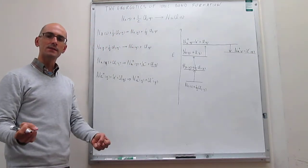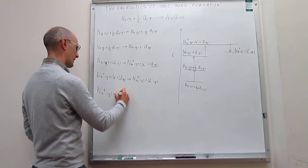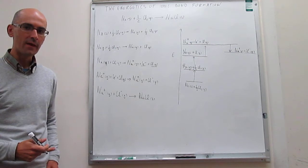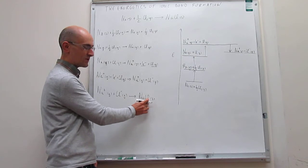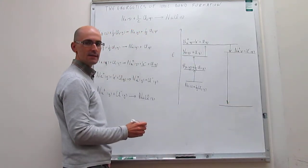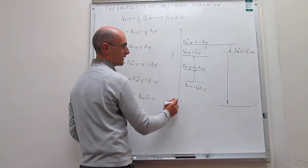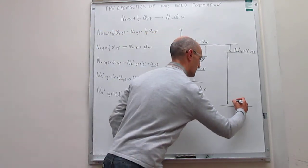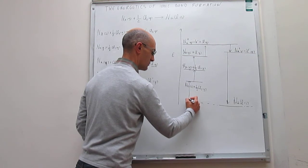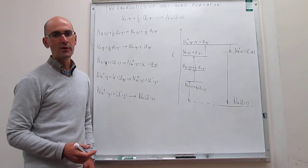The last step is to take these ions in the gas phase and have them interact to form the solid. Na⁺ gas plus Cl⁻ gas generates sodium chloride solid. This is the key interaction that makes the ionic bond possible — there is a very strong interaction between ions in the solid, and that is extremely favorable, such that the overall formation process is downhill. It is thermodynamically favorable to form the ionic solid from elemental sodium and chlorine, and the overall energy change is negative.